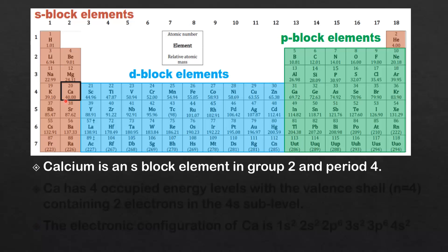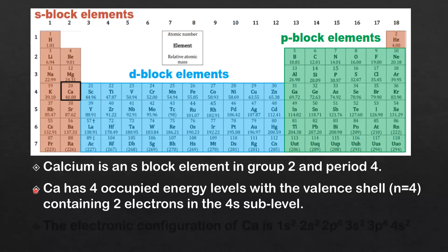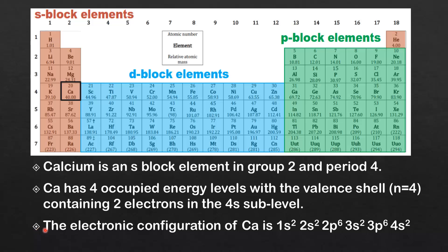Next we look at calcium. Calcium is an S block element in group 2 and period 4. Calcium has 4 occupied energy levels with the valence shell N=4 containing 2 electrons in the 4S sublevel. The electronic configuration of calcium is 1S2, 2S2, 2P6, 3S2, 3P6, and 4S2 — giving 2 electrons in the highest occupied energy level, N=4.